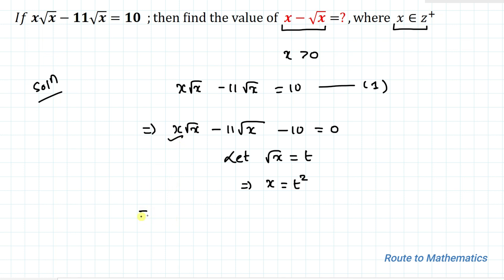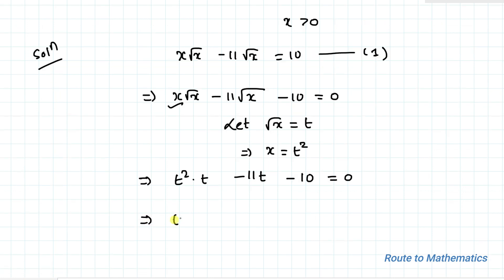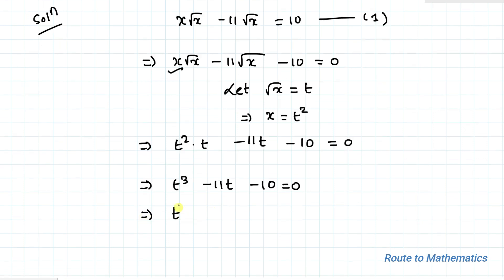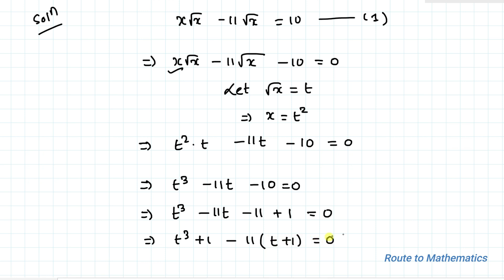By substituting, we can write t² multiplied with t, minus 11t, minus 10 equals 0. This gives t³ minus 11t minus 10 equals 0. By rearranging, I can write t³ + 1 minus 11 multiplied with (t + 1).